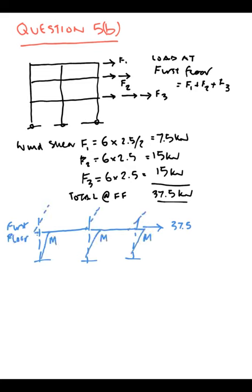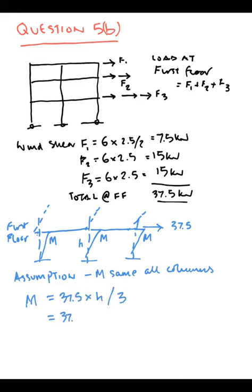We show how the bending moments, so we assume that all the columns have the same bending moment. It's 37.5 × h/3 for each case, gives you 31 kN·m per column. That's 37.5 × 2.5 ÷ 3.